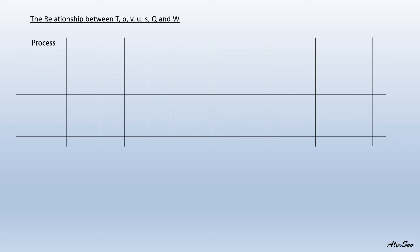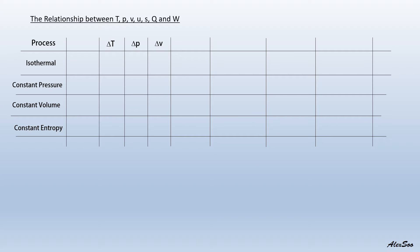We have four processes. First is isothermal. Then we have constant pressure or isobaric. Then we have constant volume and constant entropy. This shows the relationship between the changes in temperature, pressure, volume, internal energy, and entropy with heat and work.